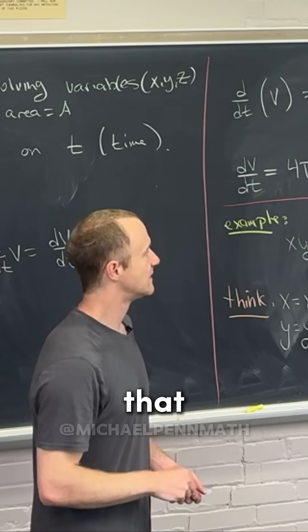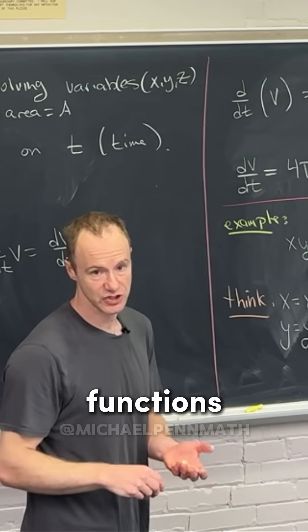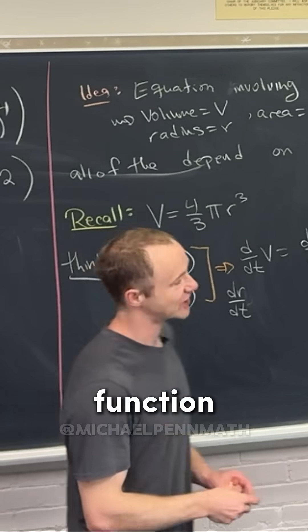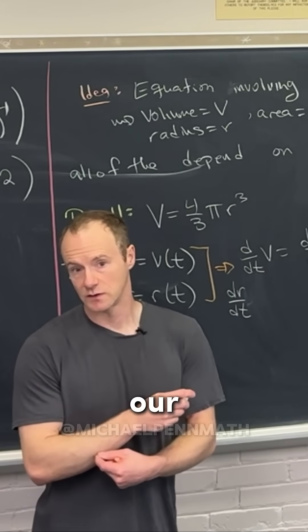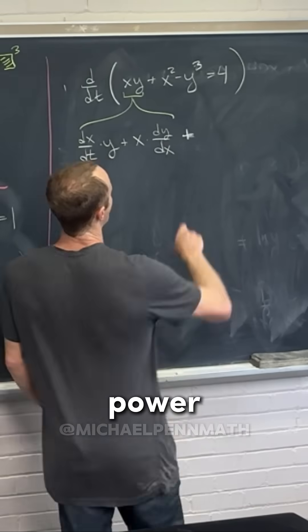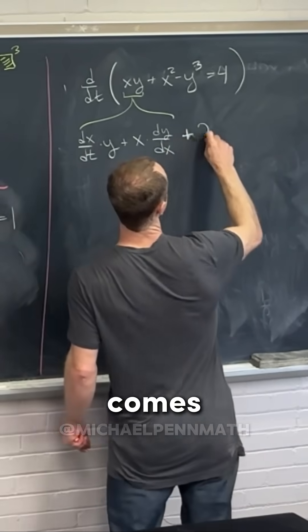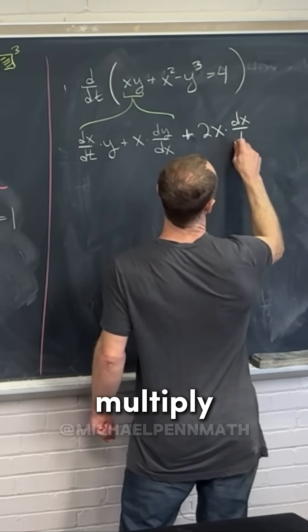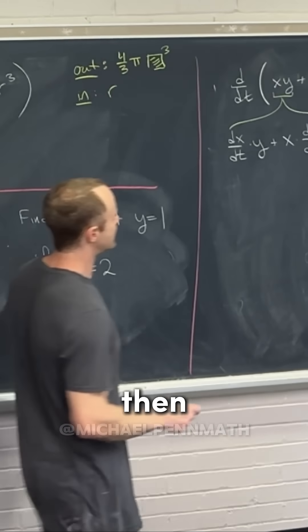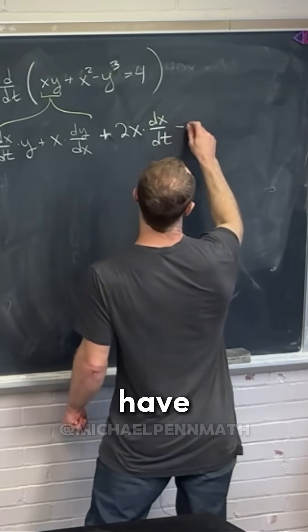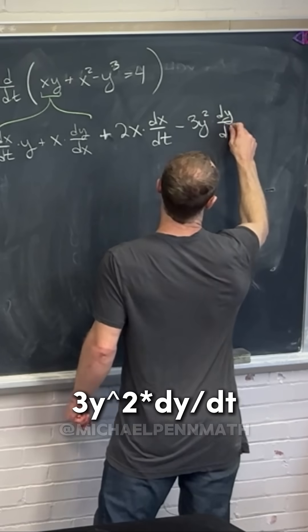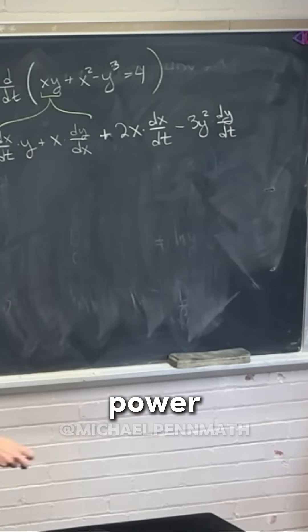Keeping in mind that x and y are both functions themselves. In the x squared term, we have x wrapped inside a squaring function, so we can use the power rule. A 2 comes down and we have x, but then we need to multiply by dx/dt because of the chain rule. Similarly, for the y cubed term, we get minus 3y squared times dy/dt, again because of the power rule.